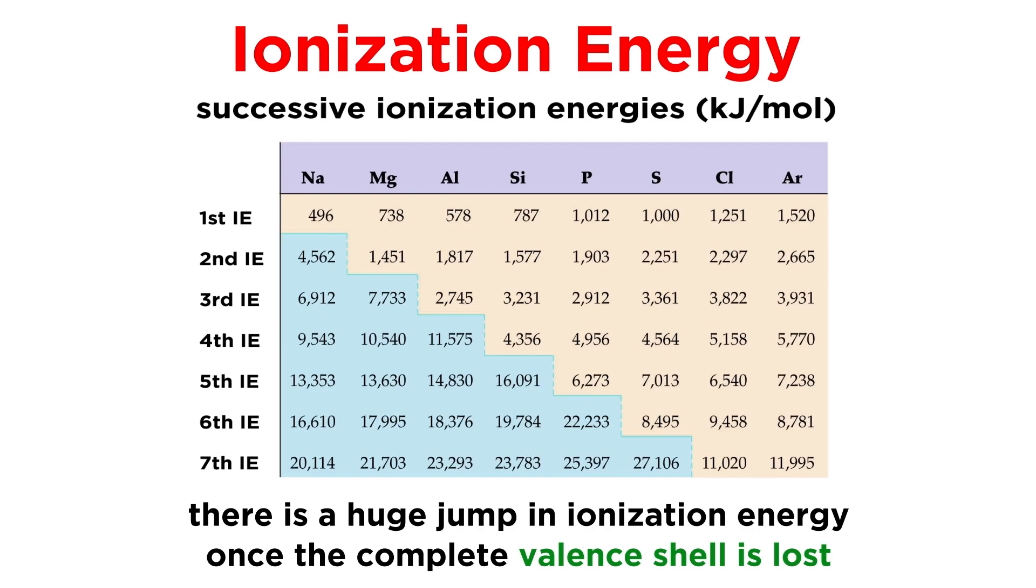In addition, there is a large jump in successive ionization energies that occur when we have completely lost the valence shell and begin trying to remove an electron from the shell below. So if an atom has two valence electrons, the first two ionization energies will be fairly low, but then the third will be dramatically larger, as it involves further ionizing the 2+ ion, which has a noble gas electron configuration, and thus a full outermost shell, which is a very unfavorable process. This is the reason it will require a dramatically larger amount of energy.